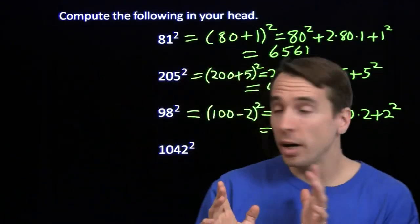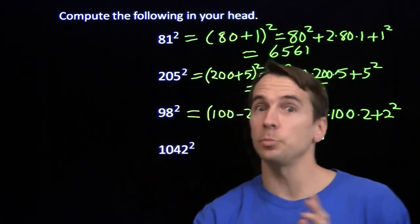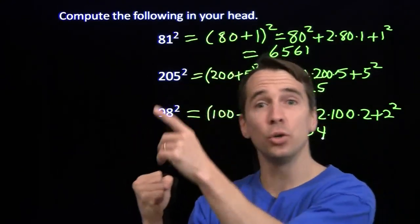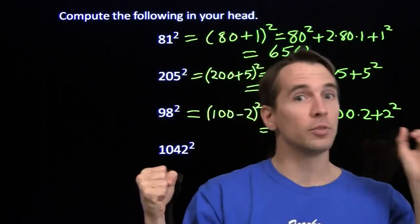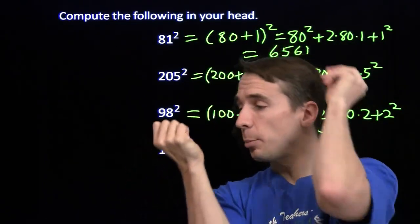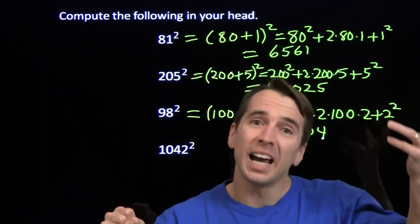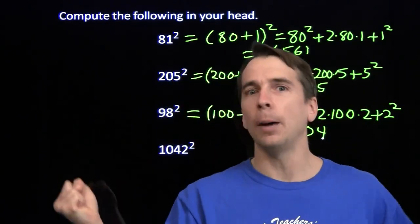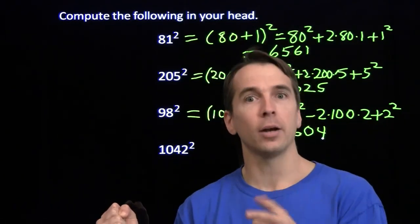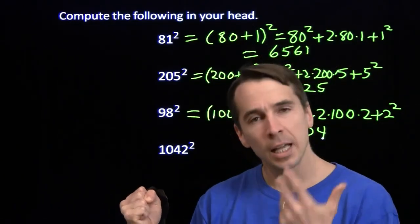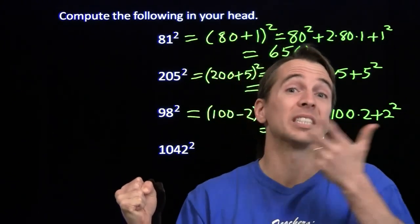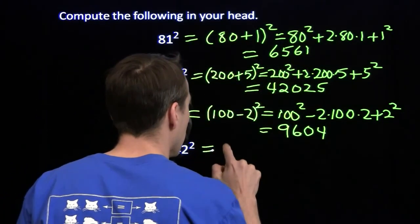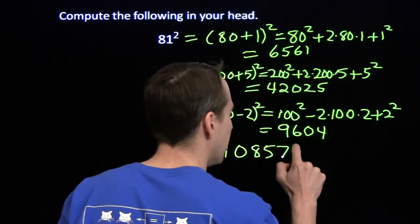We're going to square 1,042, written as 1,000 plus 42 squared. 1,000 squared is a million. Then 2 times 1,000 times 42: 2 times 42 is 84, times 1,000 is 84,000. So we have 1,084,000. Then we add on 42 squared. I'll square 40 plus 2: 40 squared is 1,600, plus 2 times 40 times 2 is 160, brings us to 1,760, plus 2 squared gives 1,764. Adding 1,764 to 1,084,000 gives us 1,085,764. And we're done.